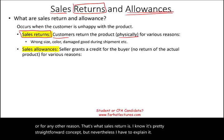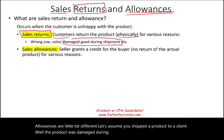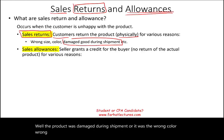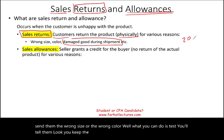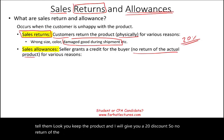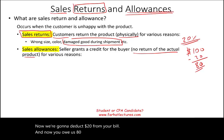Allowances are a little bit different. Let's assume you shipped a product to a client and the product was damaged during shipment, or it was the wrong color or the wrong size. The customer might call and complain. What you can do is tell them: keep the product and I will give you a 20% discount. So there's no return of the actual product. If you purchased the product for $100, we're going to deduct $20 from your bill and now you owe us $80. That's what a sales allowance is.